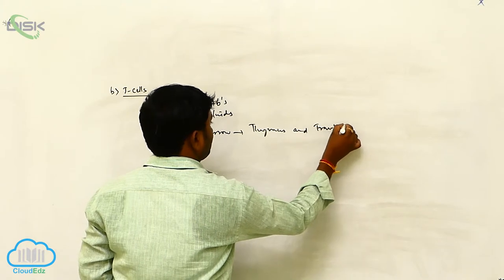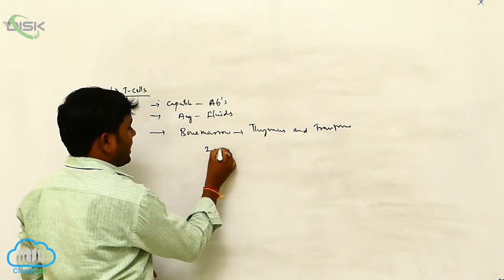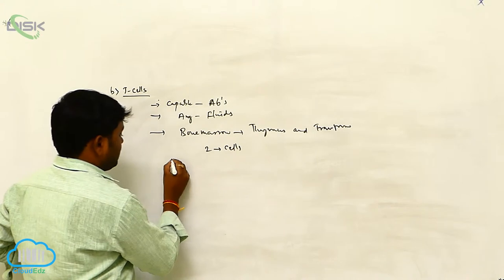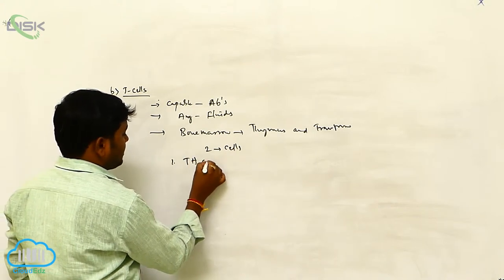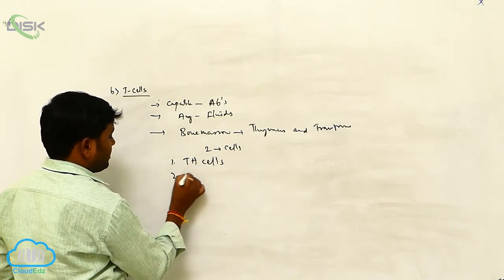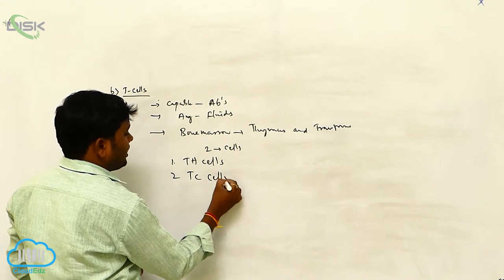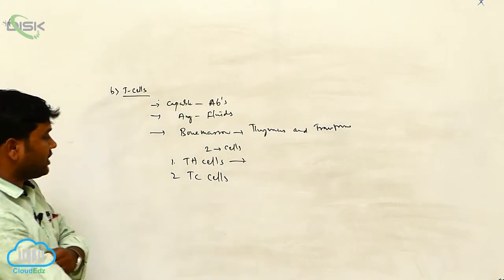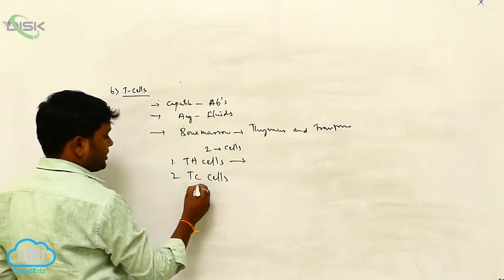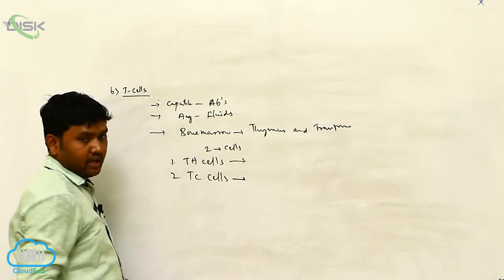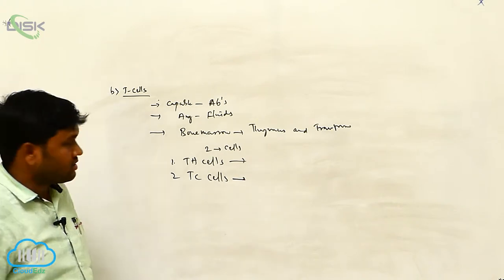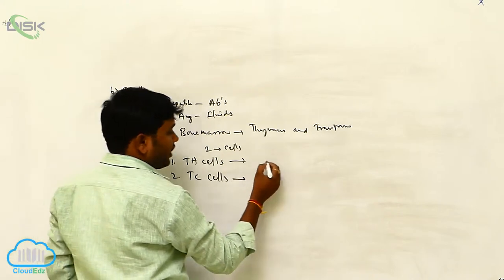The first one is TH cells and TC cells. Here, TH means T helper cells, and TC means T cytotoxic cells or T receptor cells.